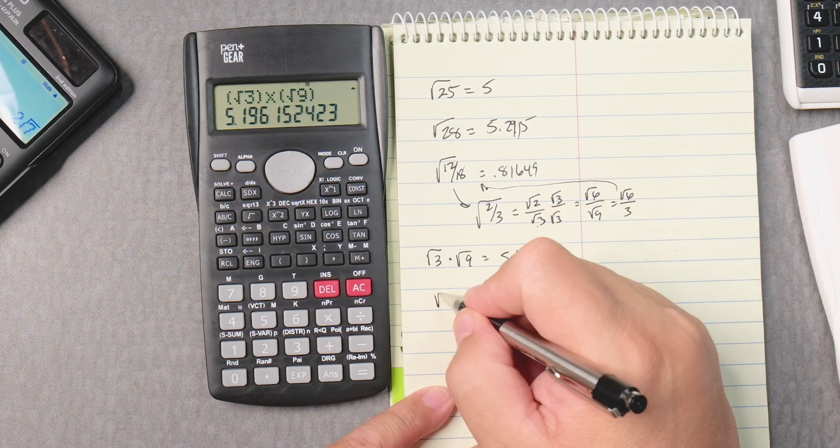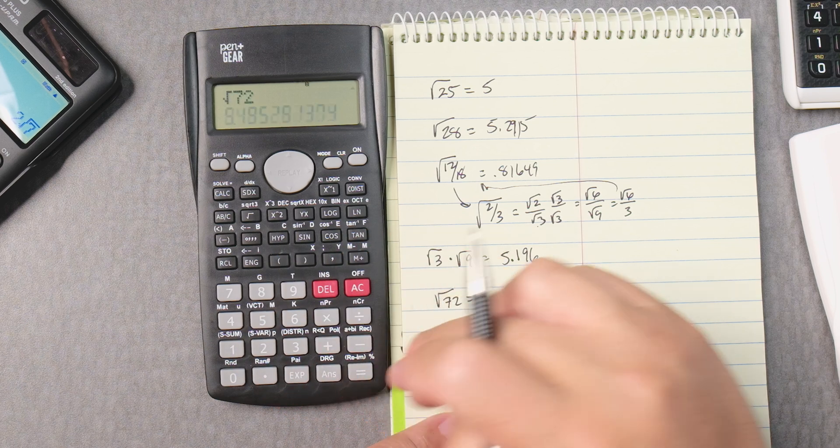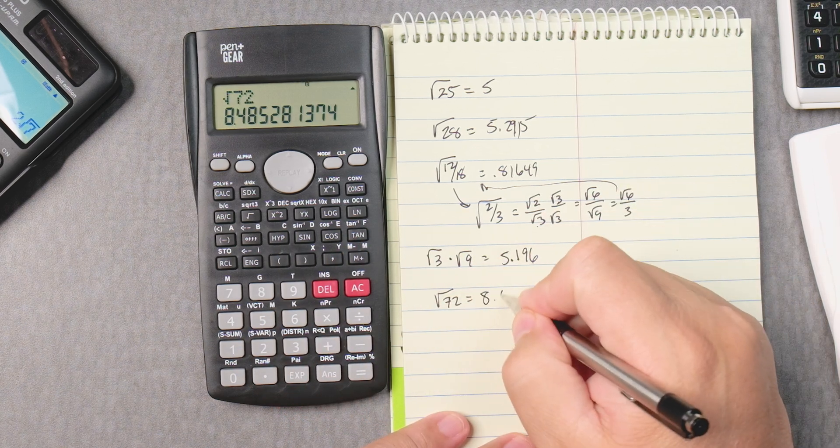How about the square root of 72? Well, square root 72, enter, and gives you 8.485.